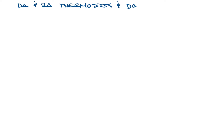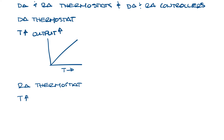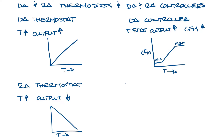You can have direct acting and reverse acting thermostats and direct acting and reverse acting controllers, and any combination of those on your VAV box. In a direct acting thermostat, when the room temperature increases, the thermostat output increases. In a direct acting controller, an increase in thermostat signal would cause the controller to increase CFM, with a min and a max and a modulation range in the middle.